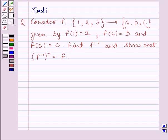Hi and welcome to the session. Let us discuss the following question. Consider function f from set {1, 2, 3} to set {a, b, c} given by f(1) = a, f(2) = b, and f(3) = c. Find f inverse and show that inverse of f inverse is equal to f.